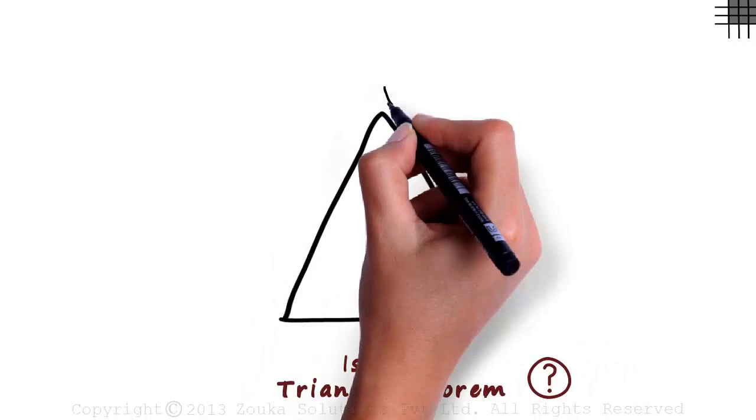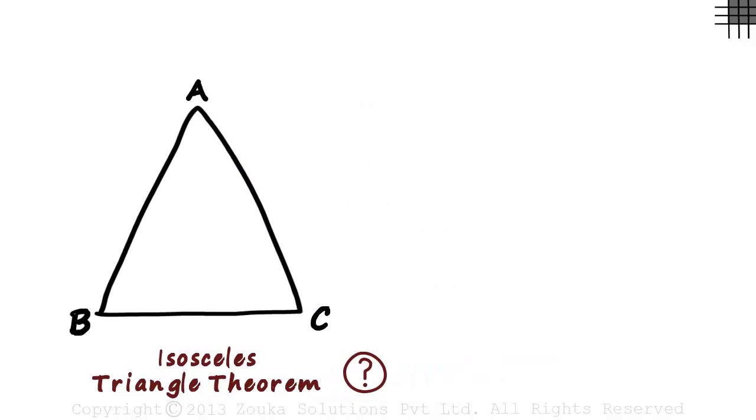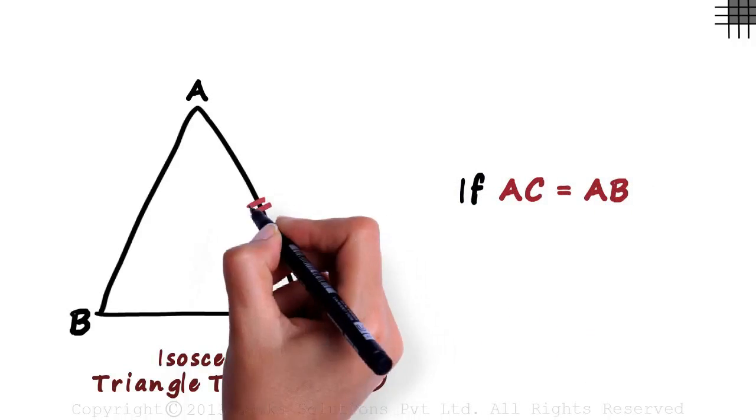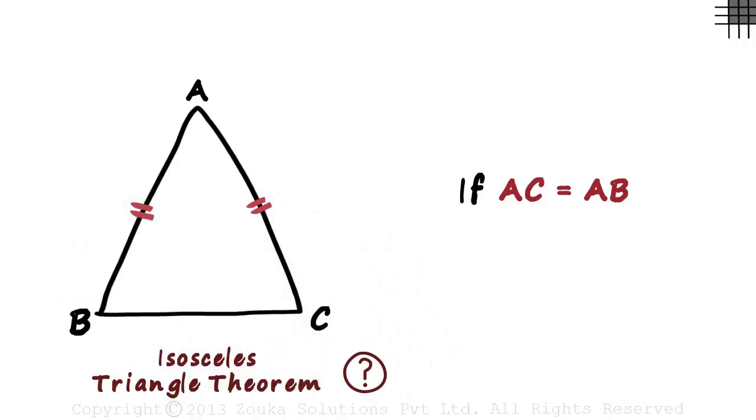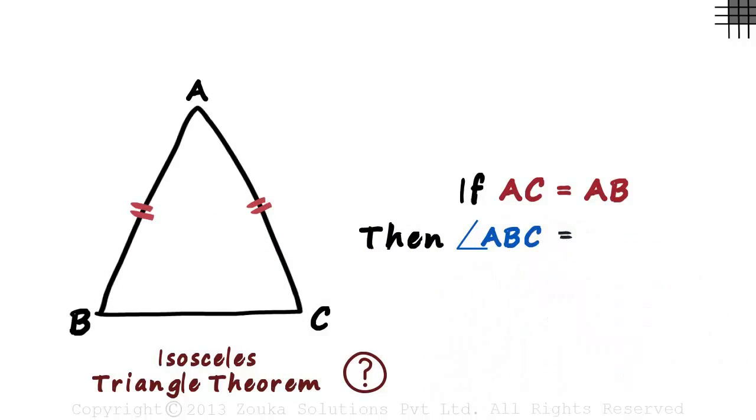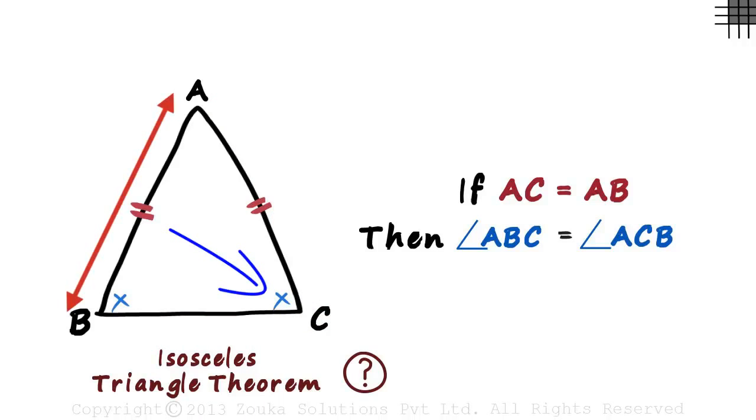Look at the triangle ABC. These two sides are equal. Let's move the triangle to the left to understand the theorem. The theorem tells us that if side AC equals side AB, that is if this side equals this side, then measure of angle ABC will also be equal to that of angle ACB. This angle which is opposite to this side will be equal to this angle which is opposite to side AB.